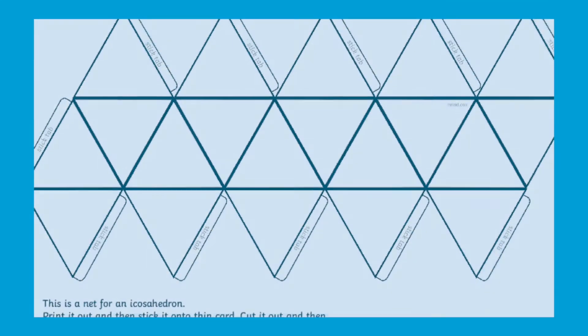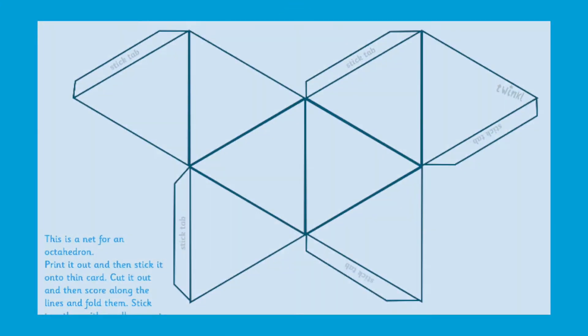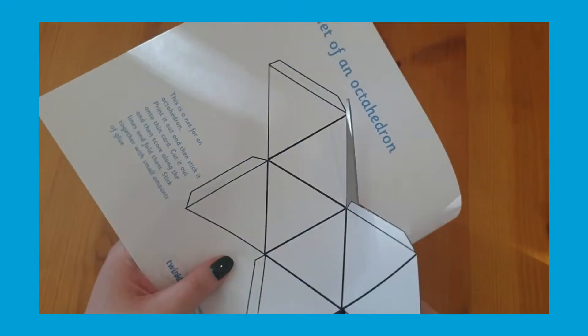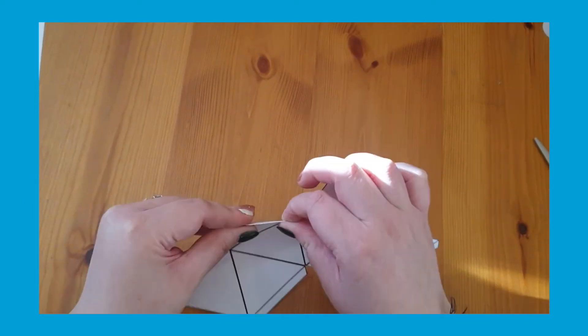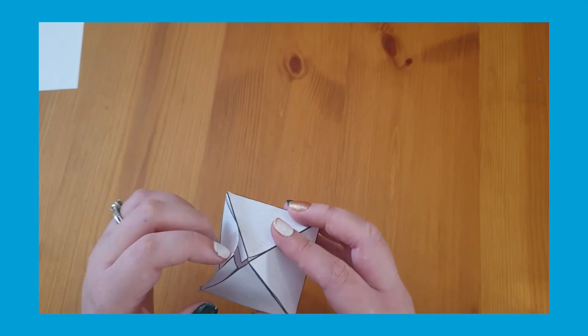You can use Twinkle's nets of shapes resources with your child or class to do just this. Take this octahedron for example. All you have to do is download the resource, print as many copies as you need, and let your students do the rest. These activities are perfect for independent learning and will help children meet key learning outcomes.